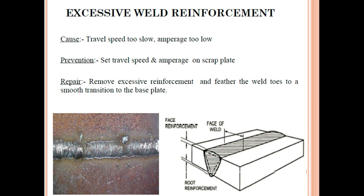Excessive weld reinforcement occurs when travel speed is too slow or amperage is too low, causing too much weld metal to be deposited. Prevention: verify travel speed and amperage on a scrap plate using the WPS before starting on the final job — always do this because the machine calibration may vary. Repair: remove the excessive reinforcement and feather the weld smoothly into a smooth transition to the base plate.